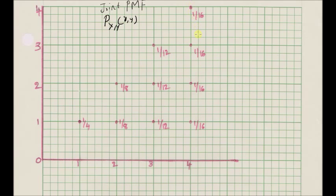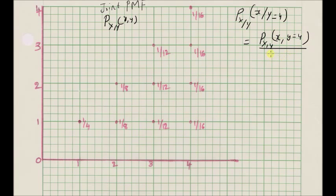Our goal is to find the conditional probability mass function of random variable X given Y = 4. By definition, this is given by the joint mass function P_{X,Y}(x, 4) divided by the probability that Y = 4.